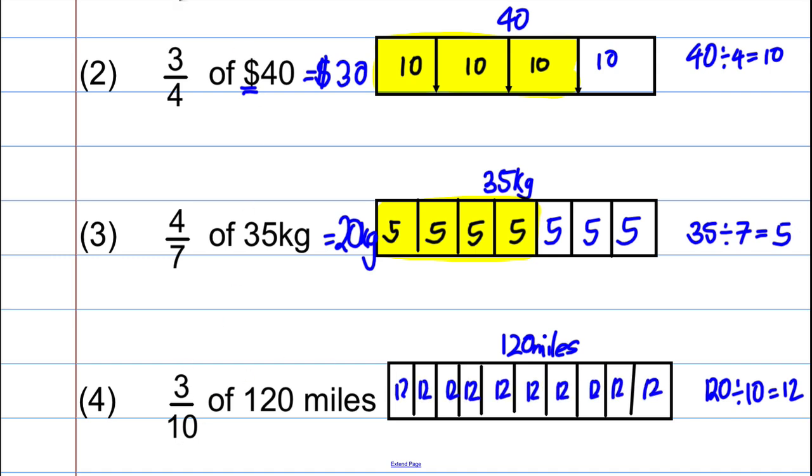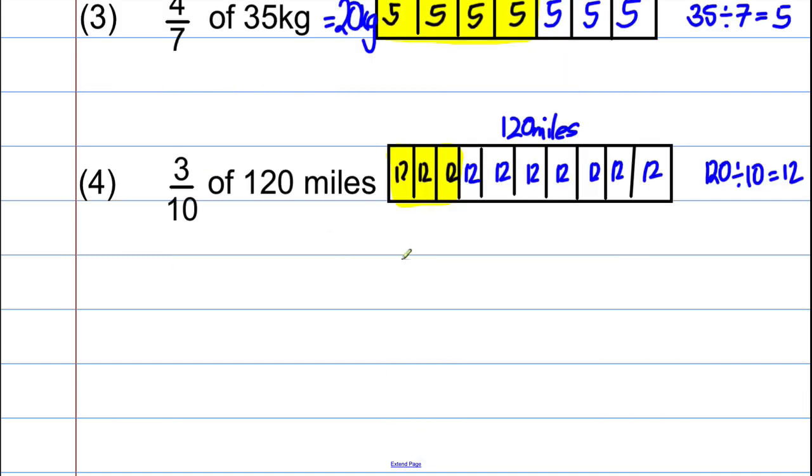And we want three of those tenths. So we want three of those tenths. And it will be 12 add 12, add another 12, which is equal to 36. And obviously, write down your unit. This would be equal to 36 miles. And there we go. That's how to work a fraction of an amount out.